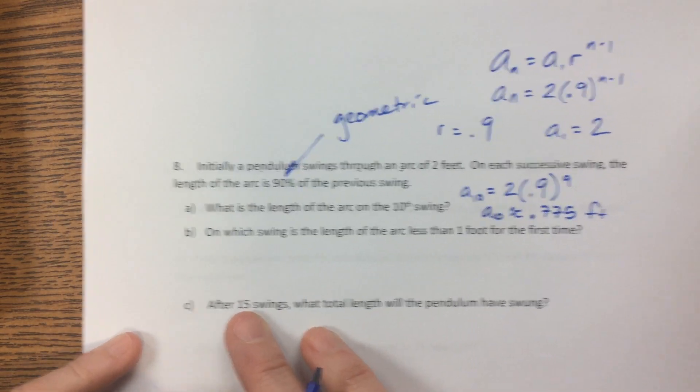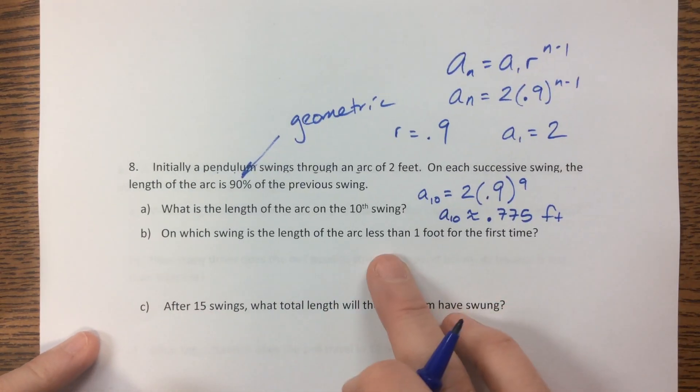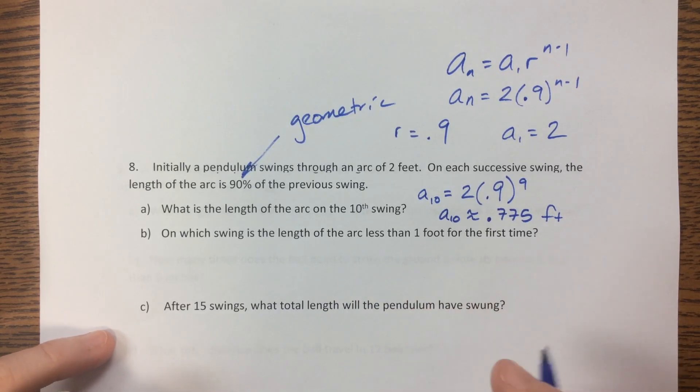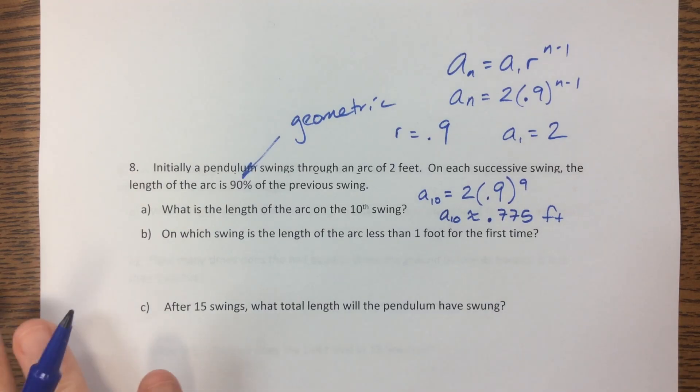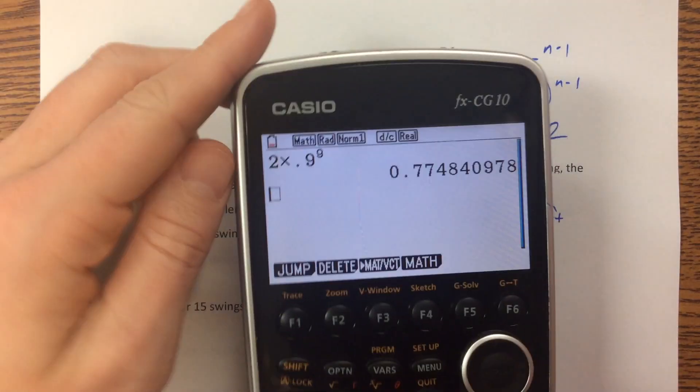And then it says, on which swing is the length of the arc less than 1 foot for the first time? Well, we know that by the tenth one, it's a bit less than that. So what I'm going to do is utilize the table on my calculator.